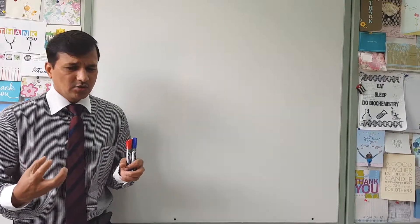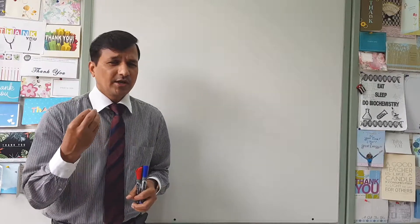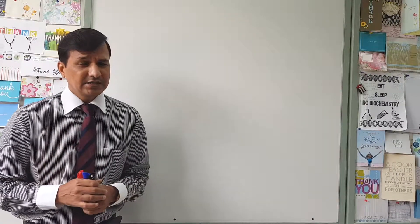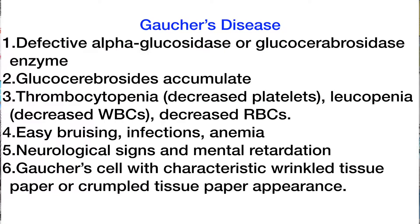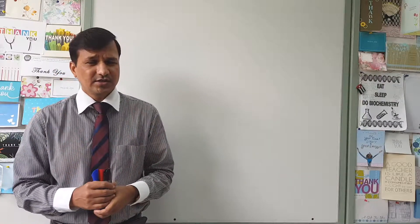Glucocerebroside can accumulate in a variety of tissues, including the bone marrow, affecting the synthesis of red blood cells, white blood cells, and platelets. Decreased platelet production gives rise to thrombocytopenia, causing easy bruising. Decreased red blood cell production gives rise to anemia, and the patient will have signs and symptoms of anemia. Decreased white blood cells give rise to leukopenia, increasing the chances of infection in these patients.